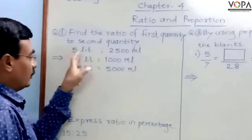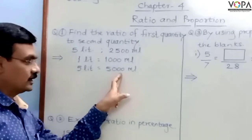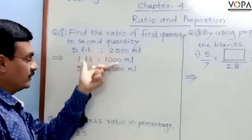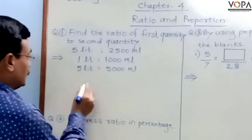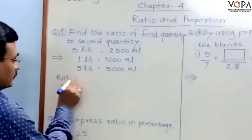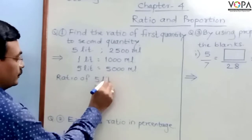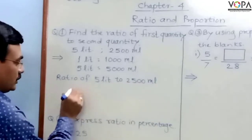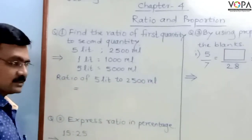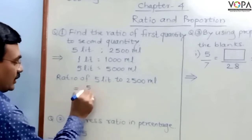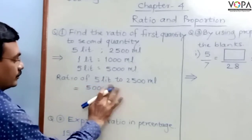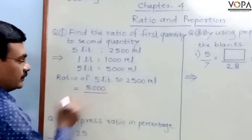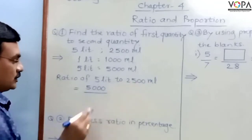Now we can find the ratio of those two quantities. The ratio of 5L to 2500mL — 5L can be written as 5000mL. Both quantities now have the same units, so we write 5000 upon 2500.